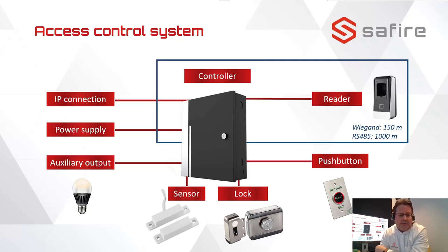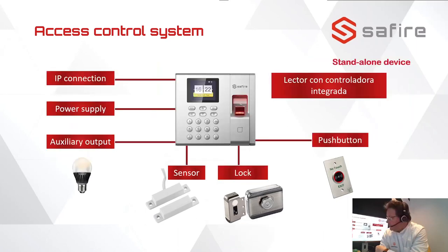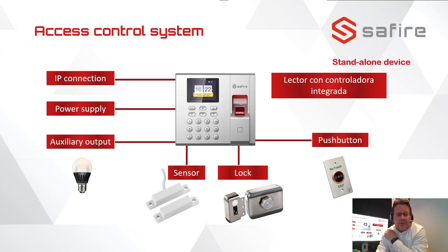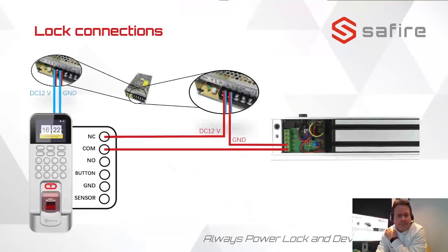There is an auxiliary port for other devices to activate, like a light bulb for example. There is an integrated power supply in this model and obviously the IP connection. Here we also have an access control system that looks like the time attendance one — it's a standalone device with a relay to open the door. So when you register that you're going to work, for example, it will open the door as well.